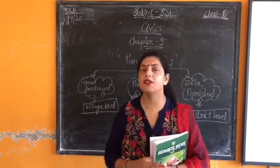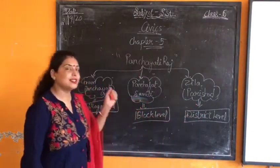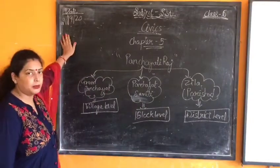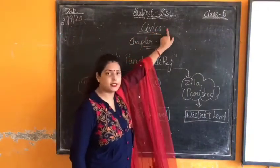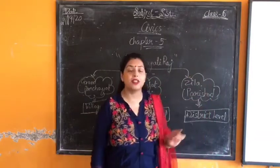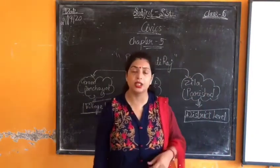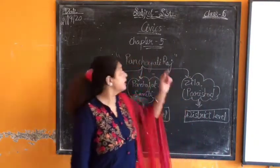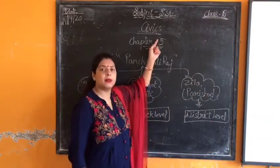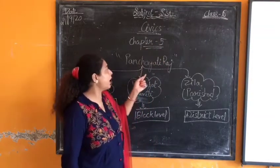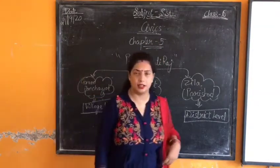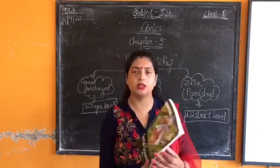This is for the first year book. Today's date is 21st September, the subject is SST, and the class is 6. The part of SST we are doing is 6, and the chapter number is 5. Today's chapter is Panchayati Raj. So this is your book.